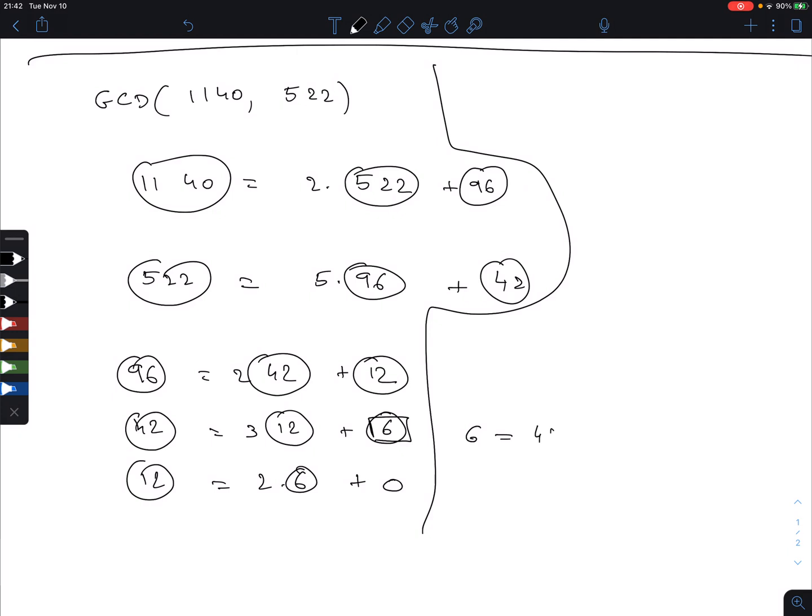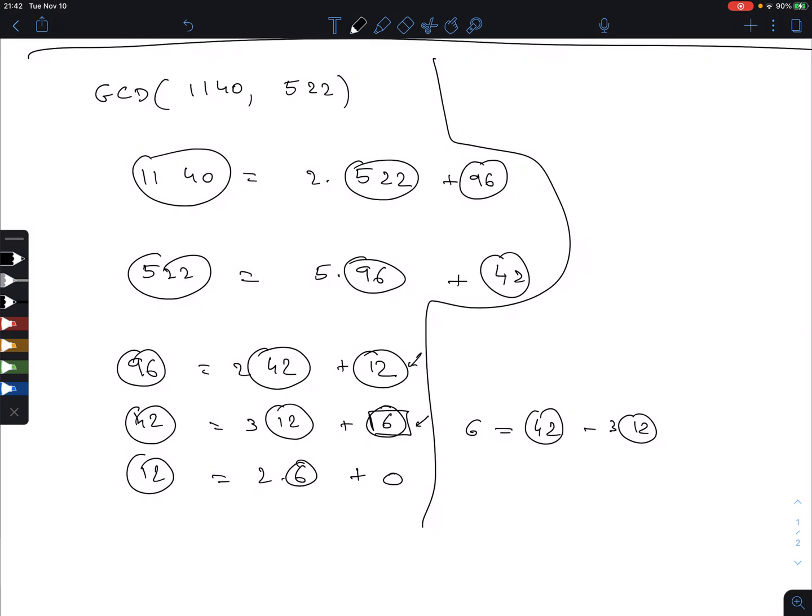So 6 is equal to 42 minus 3 times 12. That's from this equation. I use this one to replace 12. So 6 equals 42 minus 3 times 96 minus 2 times 42. Don't forget that there's always two terms, and then we have to combine them again.